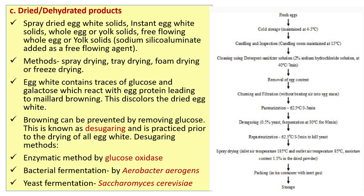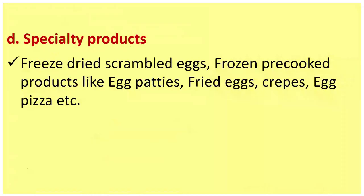Desugaring is practiced prior to the drying of all egg white. Desugaring methods are: enzymatic methods using glucose oxidase, bacterial fermentation by Aerobacter aerogenes, and yeast fermentation by Saccharomyces cerevisiae.